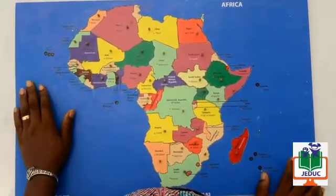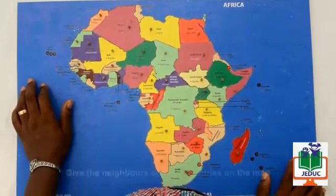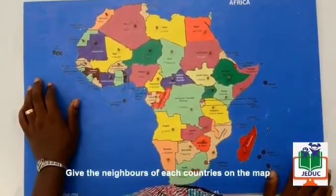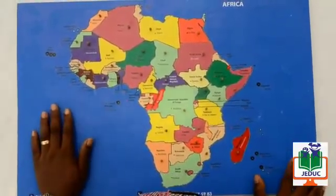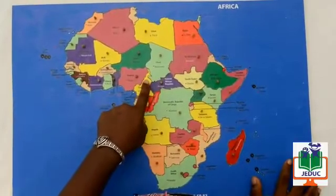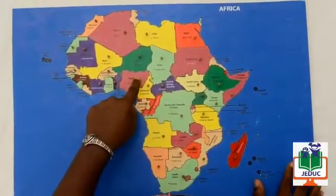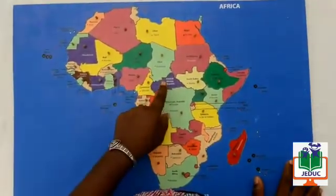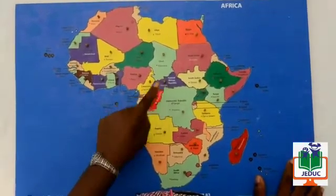Skill number two: give the neighbors of each country on the map, like this. Neighbors of Cameroon are Nigeria, Chad, Central African Republic, and the Republic of Congo.